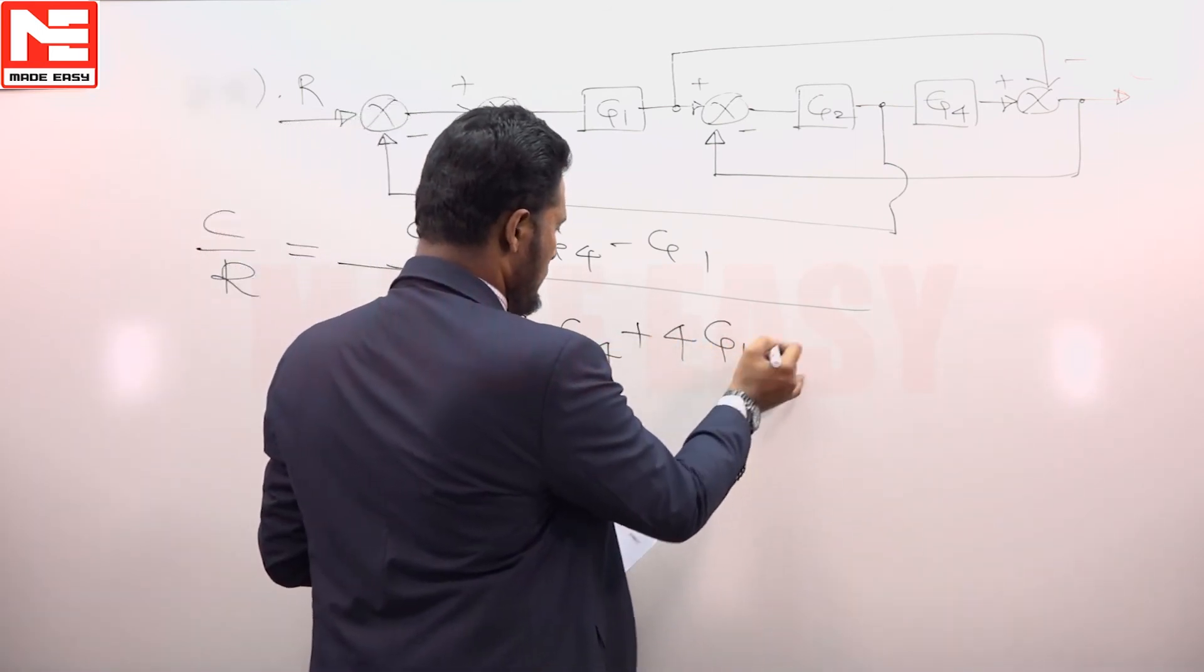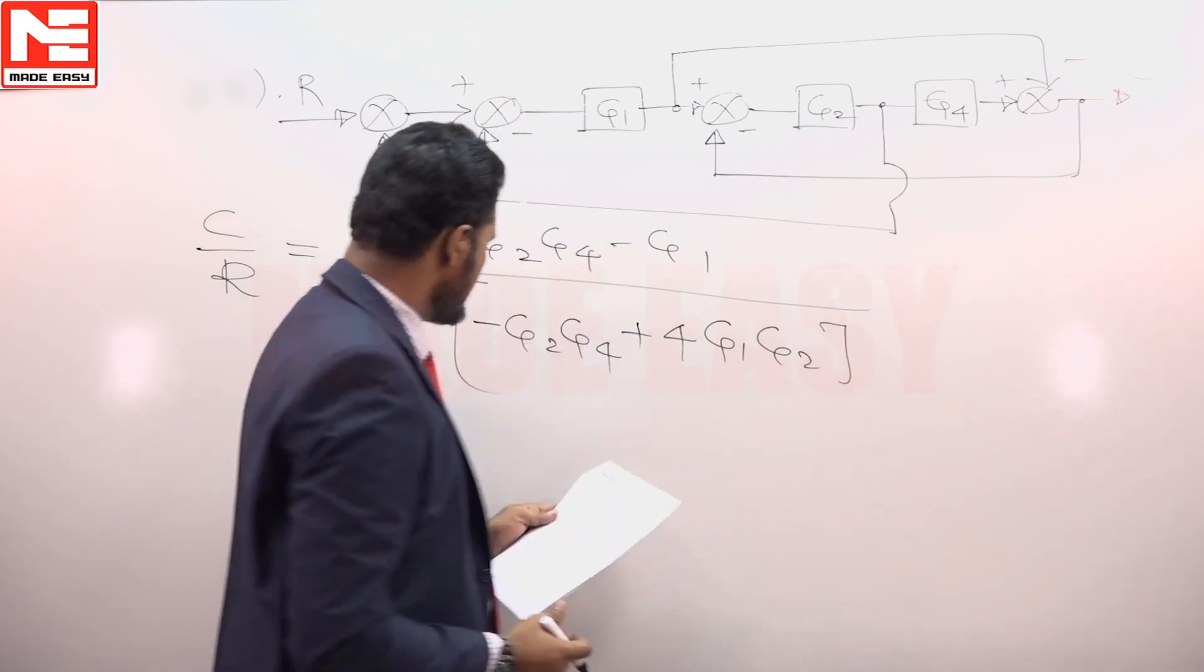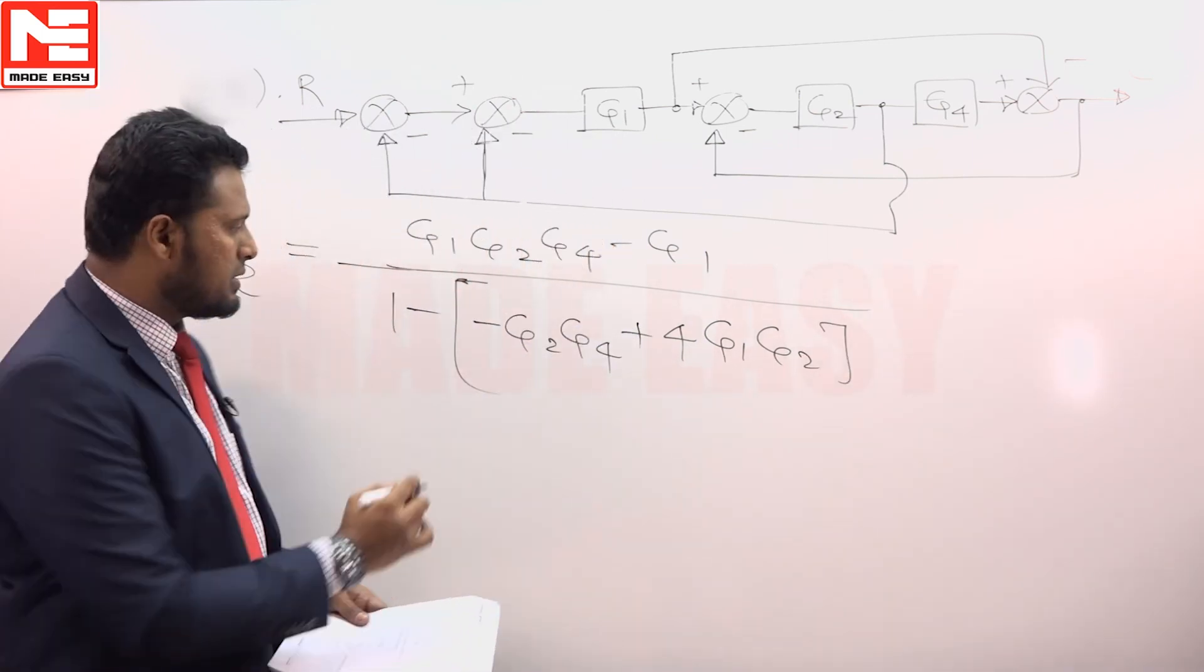So it becomes 4 G1 G2 effectively, answer D.